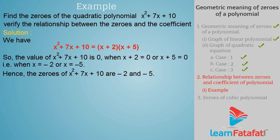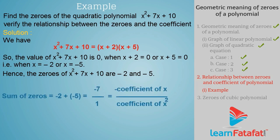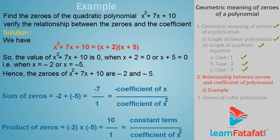Now, sum of zeros = -2 + (-5) = -7/1, that is, minus the coefficient of x divided by the coefficient of x². Also, product of zeros = (-2)×(-5) = 10 = 10/1, that is, constant term divided by the coefficient of x².